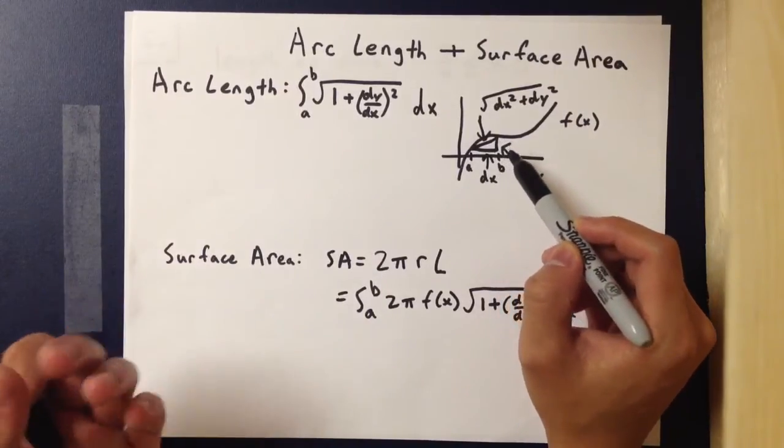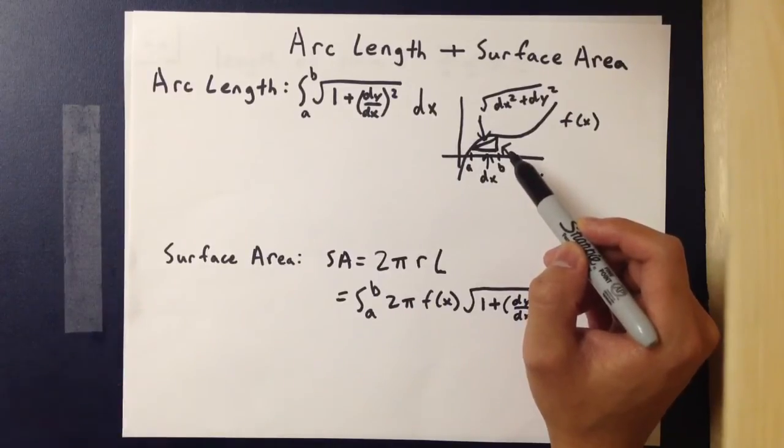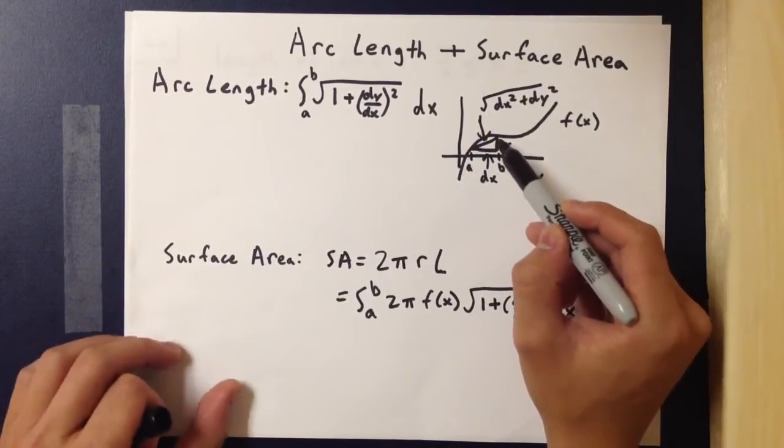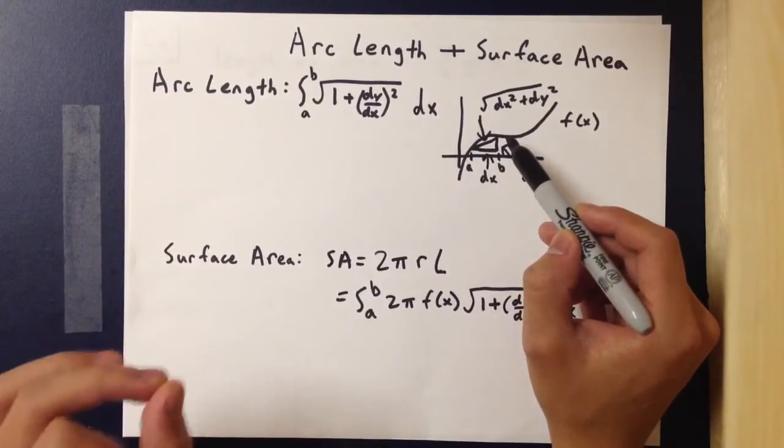But as we make that triangle smaller and smaller, it becomes a more accurate representation of the actual arc length, but just an infinitely small portion of it.